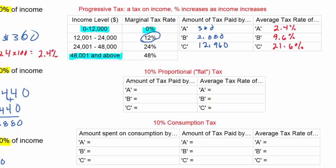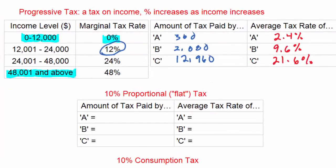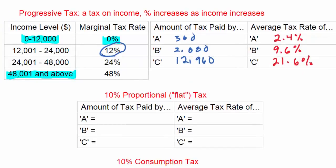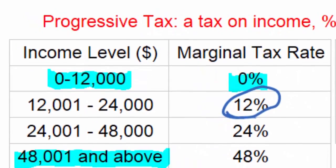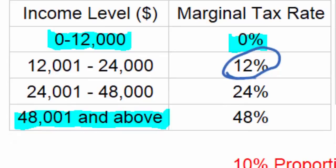Let's look at the impact of the progressive tax system on the three individuals. The individual earning $15,000 paid the lowest amount of tax and had the lowest average tax rate of just 2.4%, compared to the much higher average tax rates of Individuals B and C. As income rose, both the amount of tax paid and the average tax rate increased. The progressive tax places a larger burden on those with higher income. It should be noted that the average tax rate does not increase as rapidly as the marginal tax rate, because marginal tax rates only apply to income earned above a certain amount — and any income below that amount is taxed at a lower rate, or in the case of $0 to $12,000, not taxed at all.